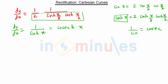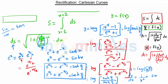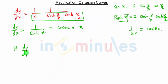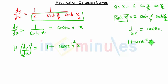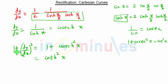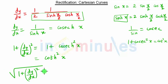So dy/dx = csch x, since 1/sinh is cosecant hyperbolic. After finding dy/dx, we now want 1 + (dy/dx)². So we have 1 + csch²x. Using the identity, 1 + csch²x = coth²x. So 1 + (dy/dx)² = coth²x. The square root of this term is therefore coth x.